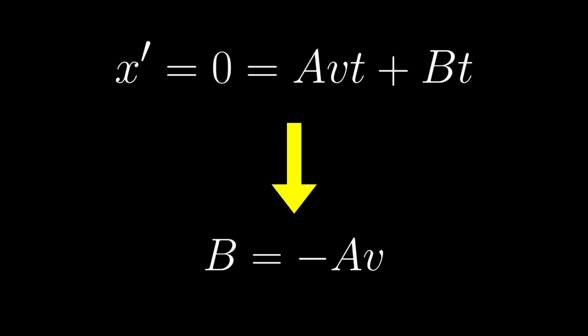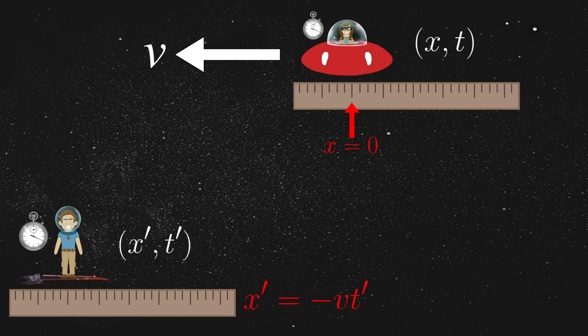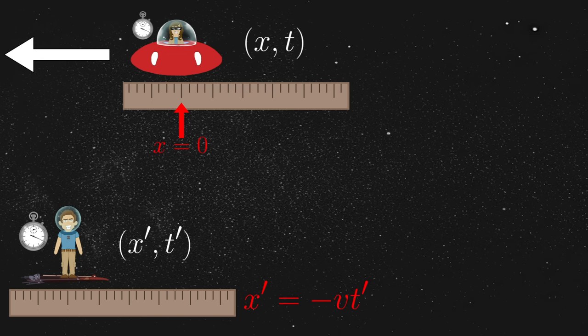Let us further imagine the exact same situation in reverse. That is to say, Jim measures Annie's position from his perspective, which he naturally observes as x prime equals negative vt prime. In other words, he sees the exact same thing that Annie did, but in the opposite direction. Again, by definition, this corresponds to Annie's origin at x equals 0, and so the transformation from Jim's frame of reference follows a similar argument.